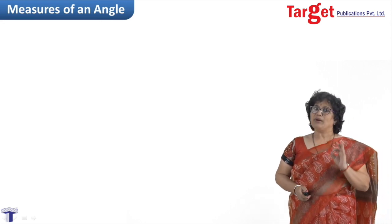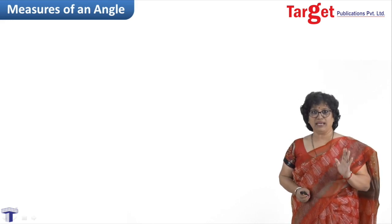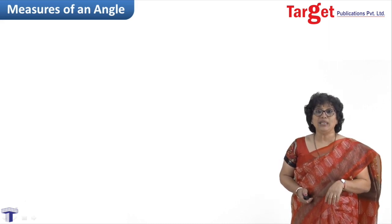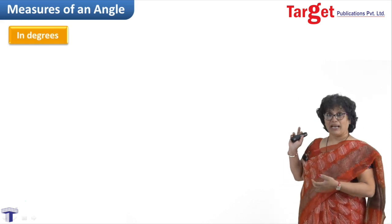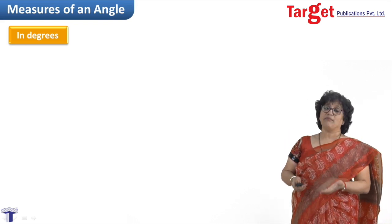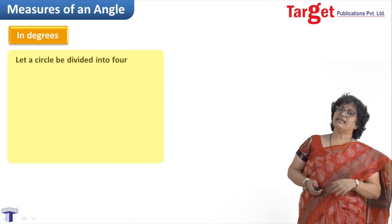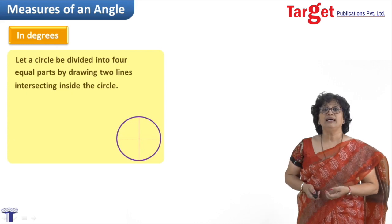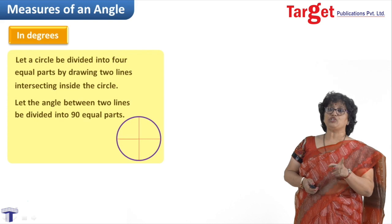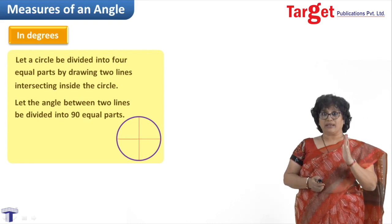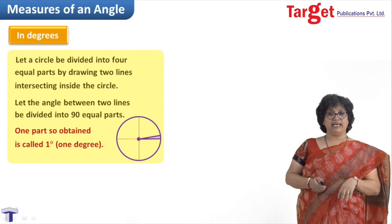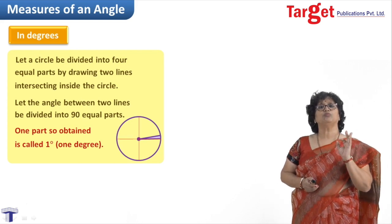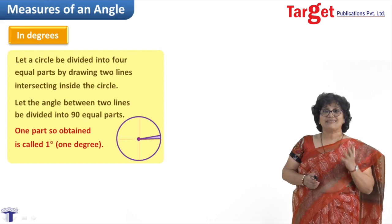In trigonometry the first thing we need is an angle. What kind of angles did you have in previous classes? You were measuring them only in degrees. So when I say measures of an angle in degrees, you can expect there is something more also. Let us revise: if a circle is given, you draw two perpendicular lines and divide that circle into four equal parts, then divide that quarter part into 90 equal parts — one such part is called one degree. You must have used a protractor. Let us not extend this degrees part further.